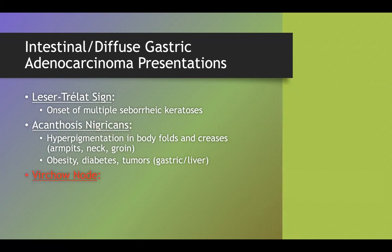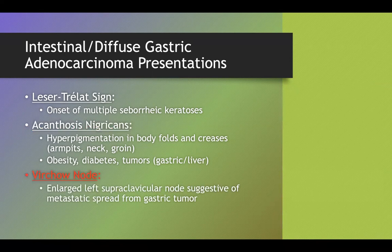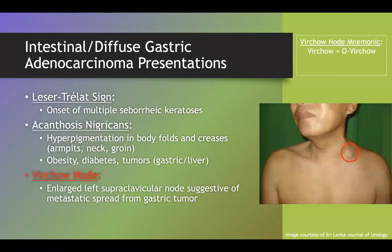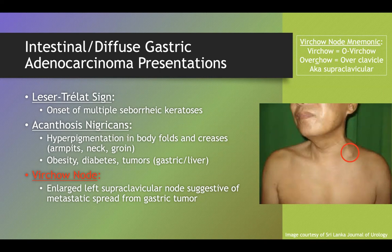The third sign is the Virchow node — an enlarged left supraclavicular lymph node, suggesting the tumor has spread from the primary gastric site to that node. On a test they'll usually just tell you it's enlarged. A mnemonic: think of Virchow as 'Ov-Virchow' — adding an O makes 'overcal,' and the C stands for clavicle, helping you remember it's the left supraclavicular node associated with gastric adenocarcinoma.